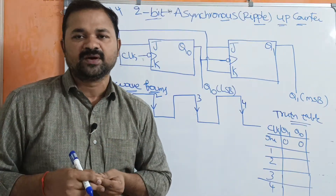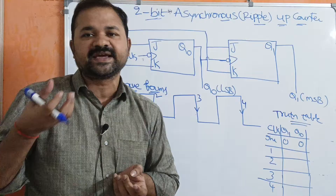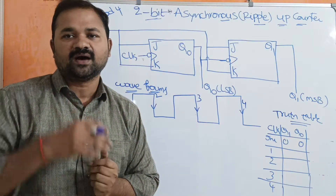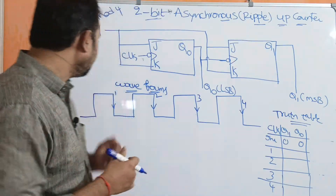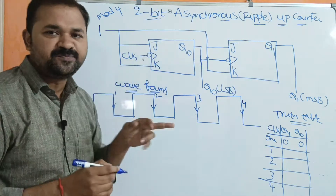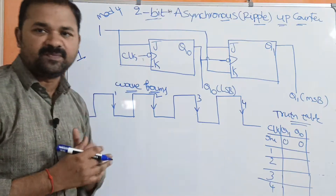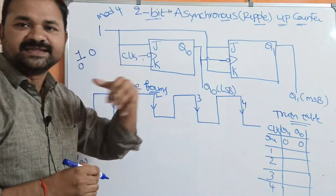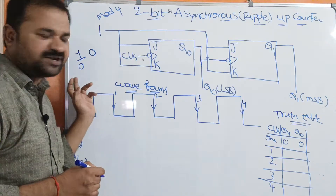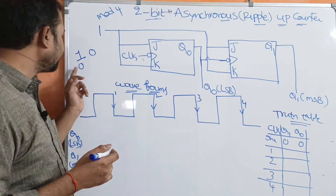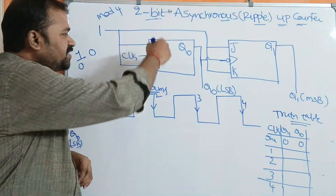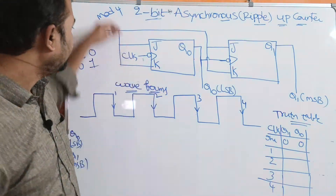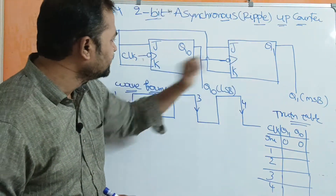In the JK flip-flop, the toggle operation works when J and K are both 1. When J and K are 1, the output will be complemented. If the present state output is 0 and inputs are 1, 1, then the output will be toggled to 1. So, we connect 1 to both J and K inputs.